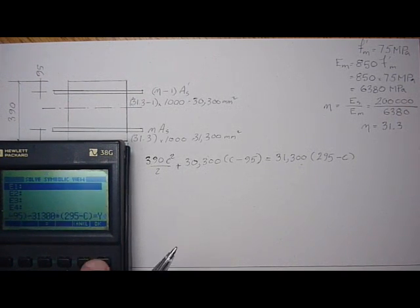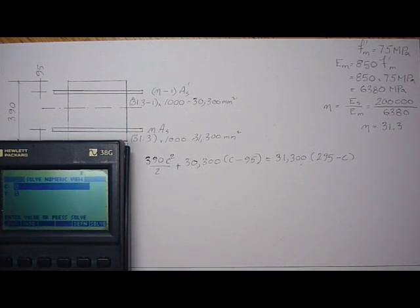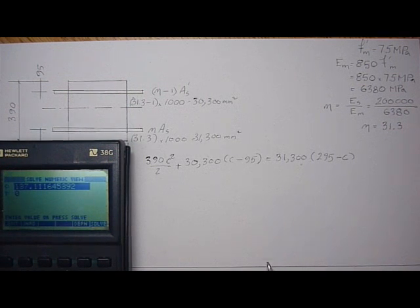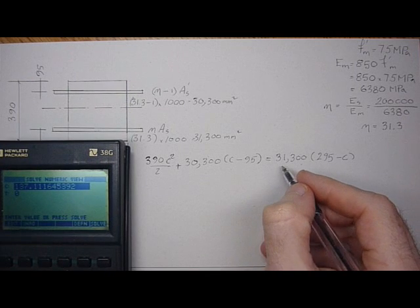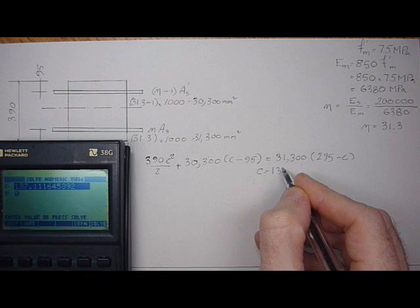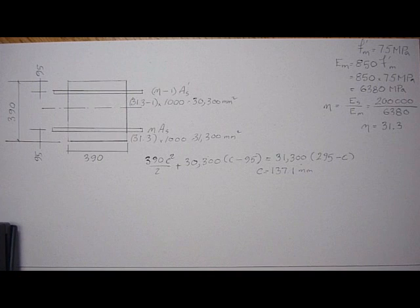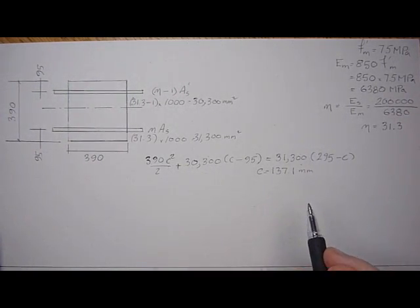Set Y equal to 0 to solve for C. In numerical mode, I think it just solved it. C is 137.11, so C equals 137.1 millimeters. And now we can find the inertia of the section.